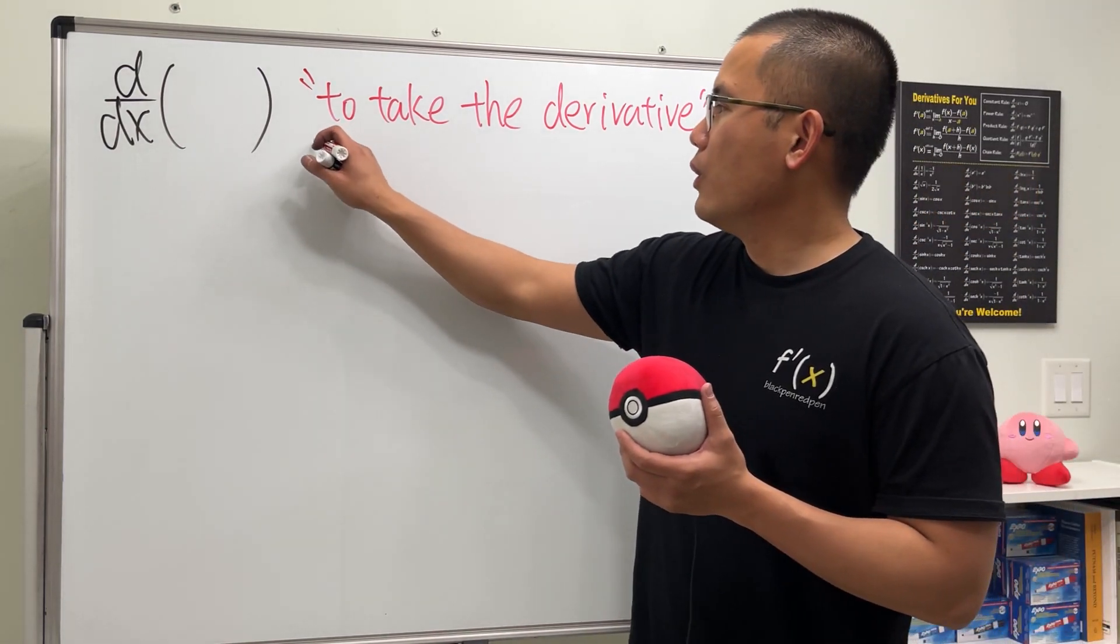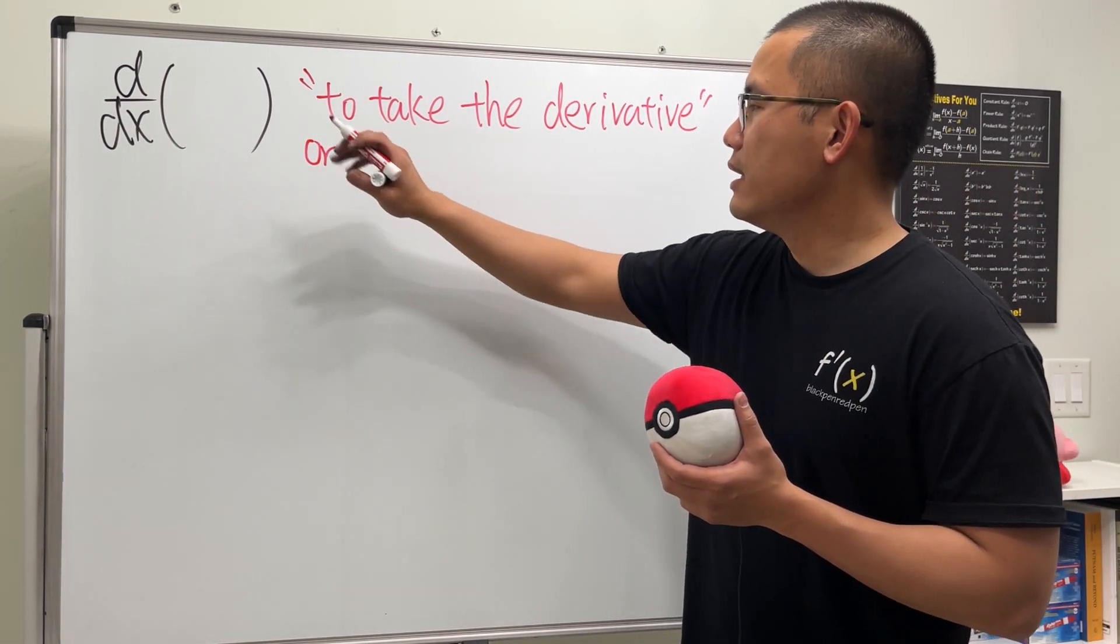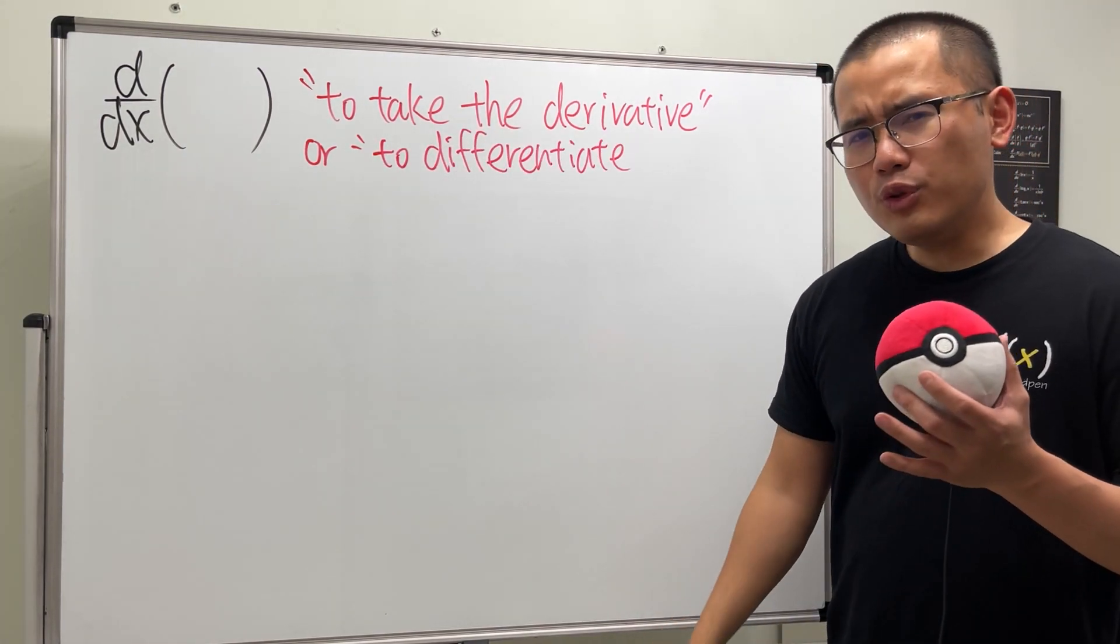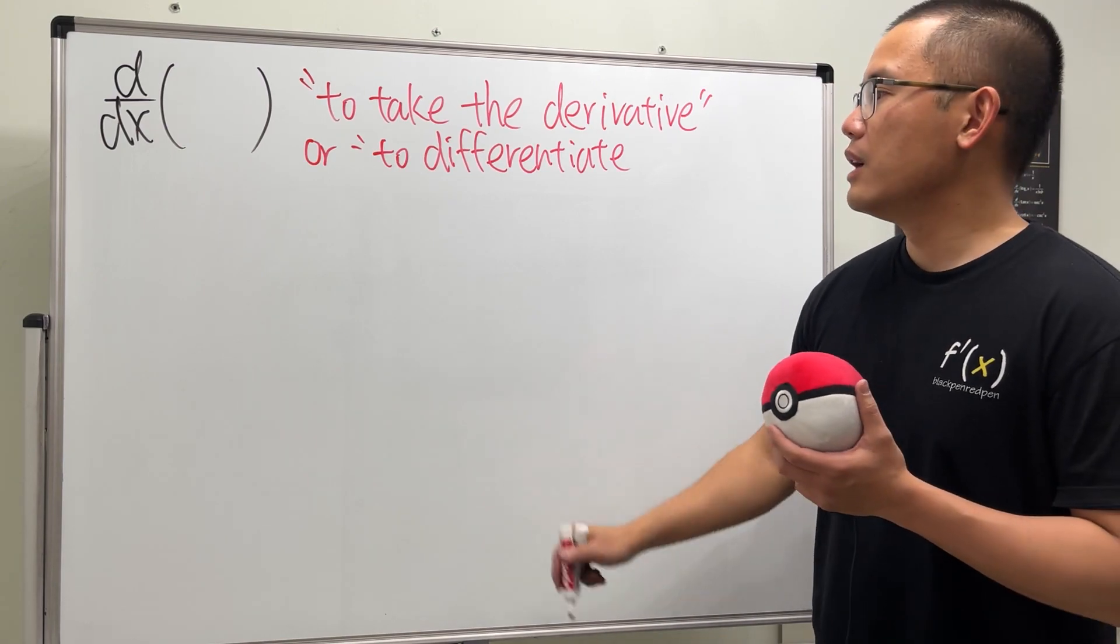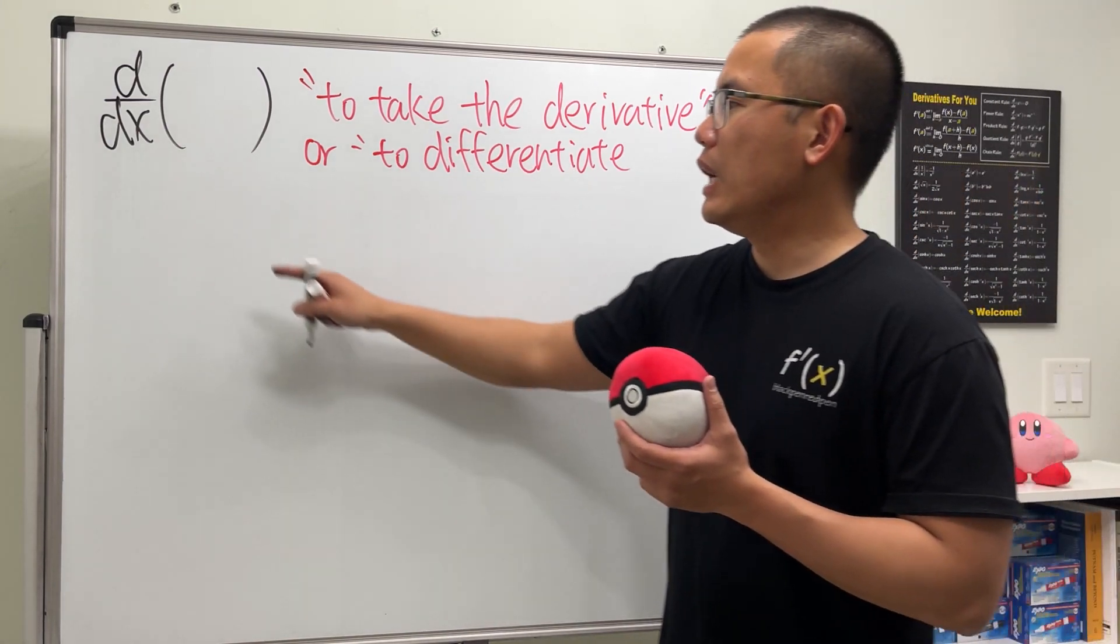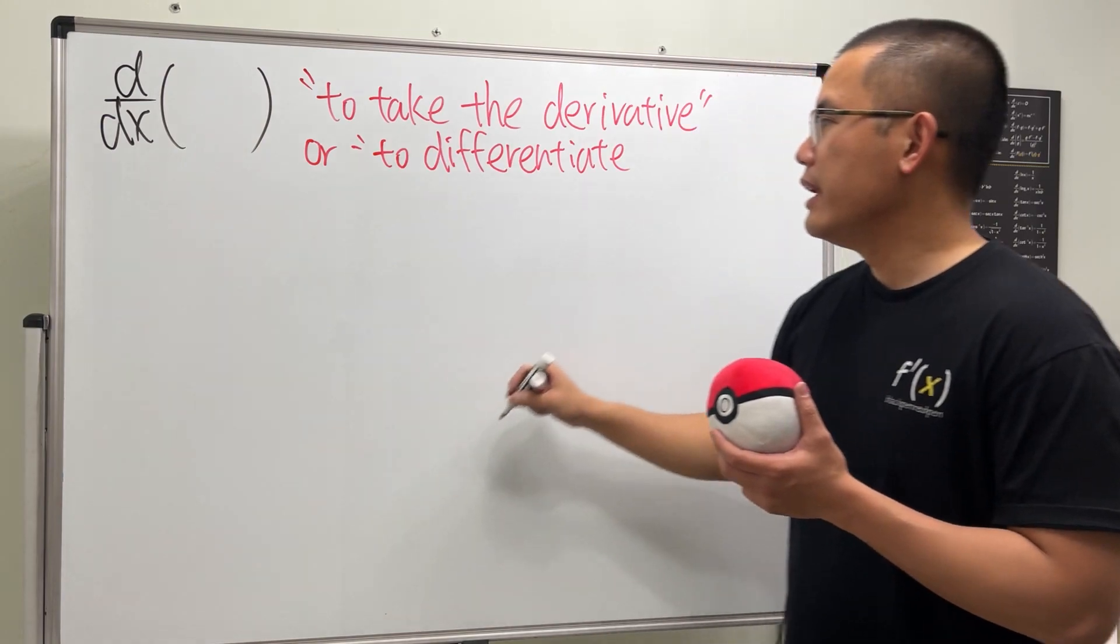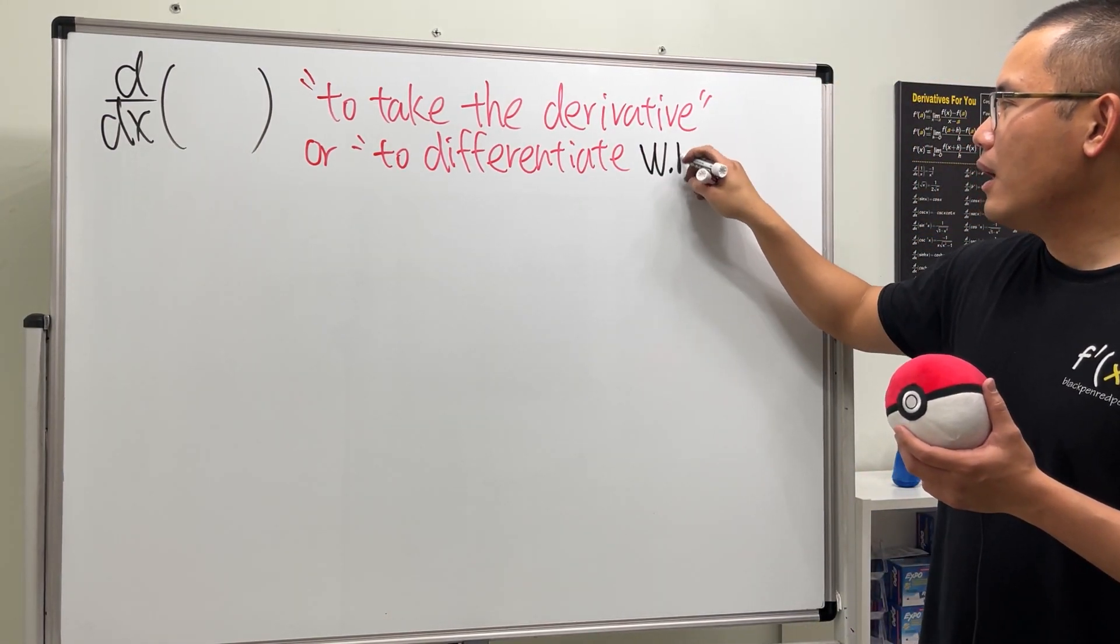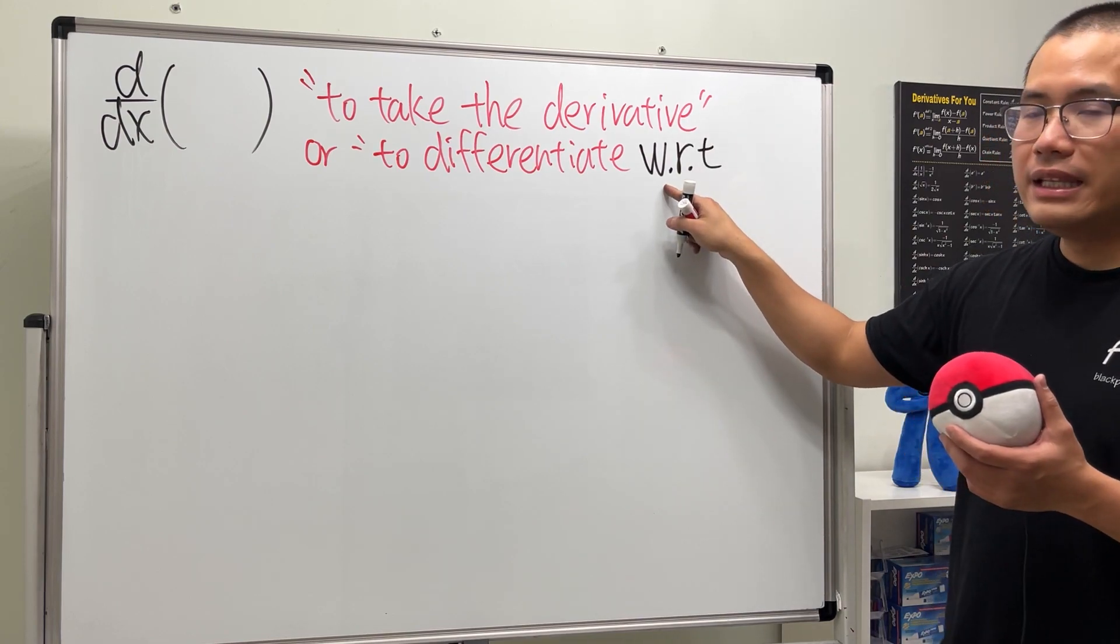Sometimes you may also hear people say we are going to differentiate. And if you want to be even fancier, you can make it like this: we are going to differentiate and we pay attention to this variable, and you write this down abbreviation, w.r.t., and this means with respect to this variable which is x.